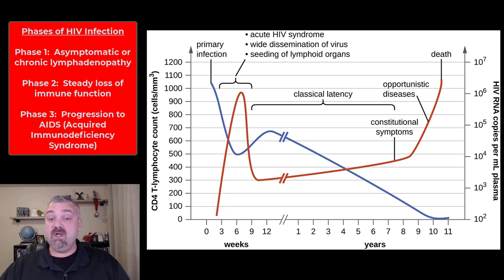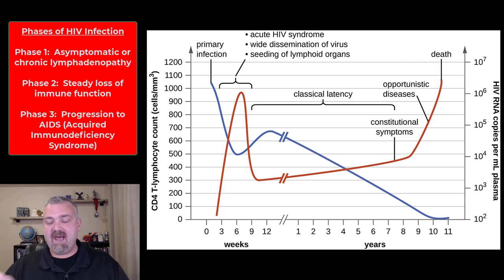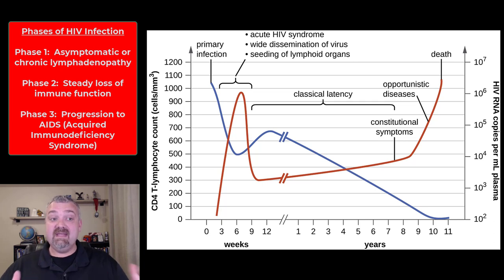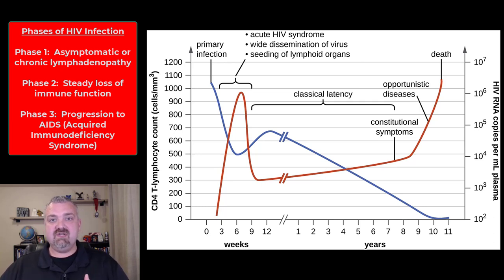So just real quickly, I'll get them out of the way. Phase one is either going to be asymptomatic, or if you have any symptoms, it would be chronic swollen lymph nodes — chronic lymphadenopathy. Phase two is a persistent decline in health as your immune system gets weaker and weaker, with no specific infections but increasing susceptibility. We'll also talk about constitutional symptoms. Then phase three is when HIV actually leads to AIDS — acquired immunodeficiency syndrome.